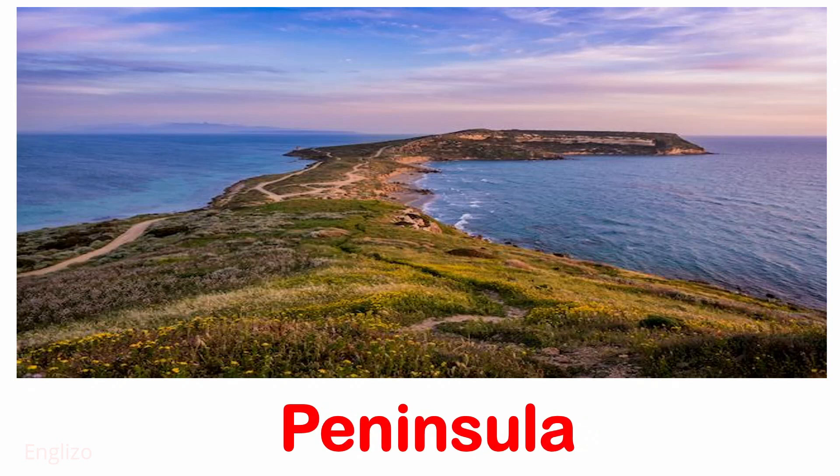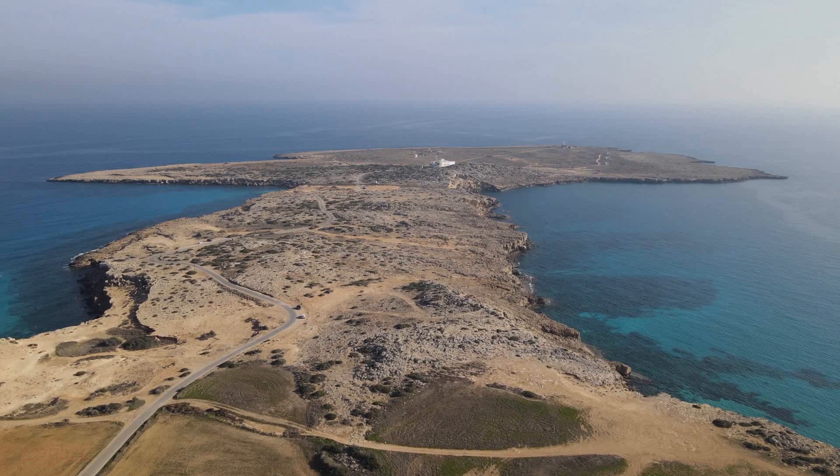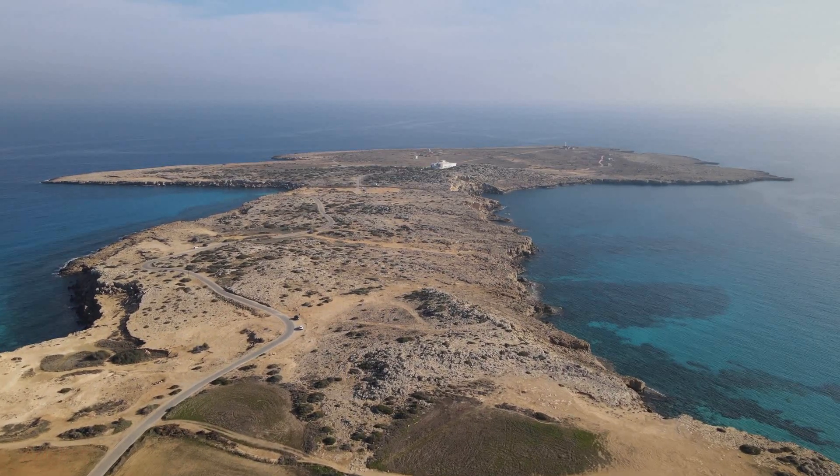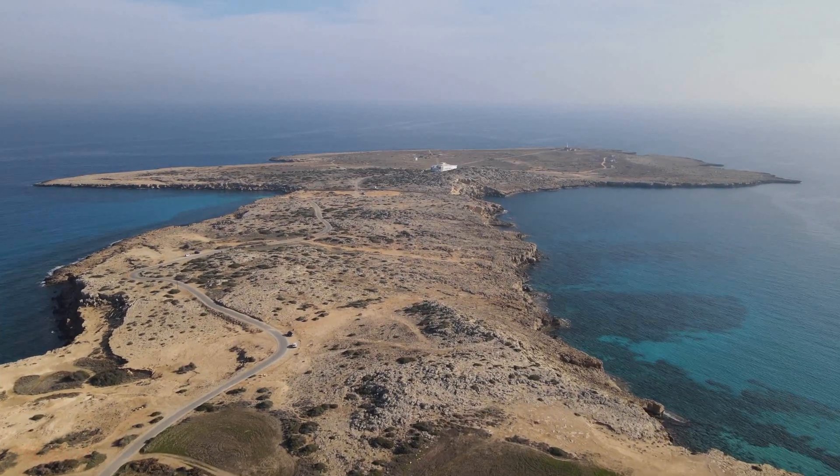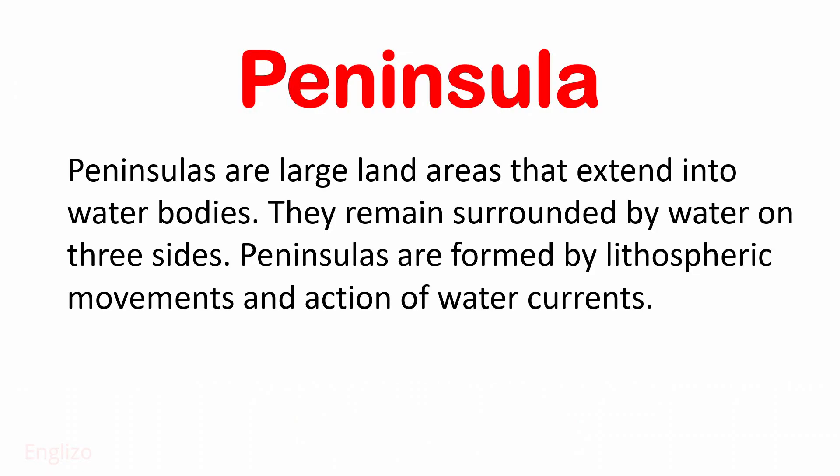Next is Peninsula. Peninsulas are large land areas that extend into water bodies. They remain surrounded by water on three sides. Peninsulas are formed by lithospheric movements and the action of water currents.